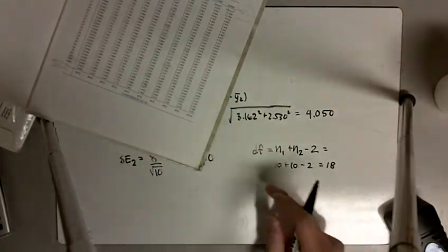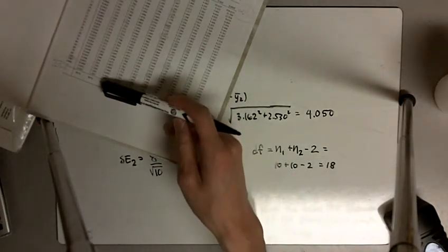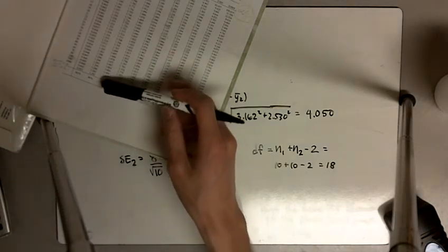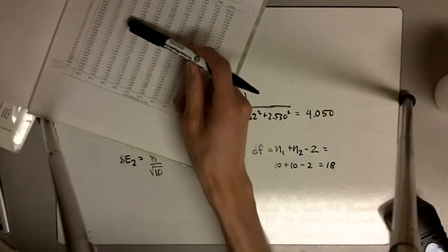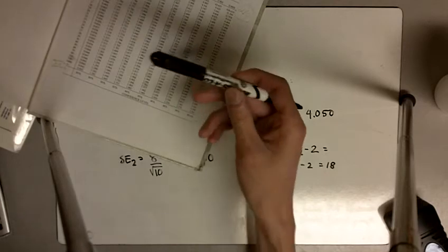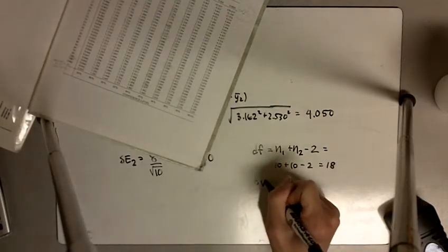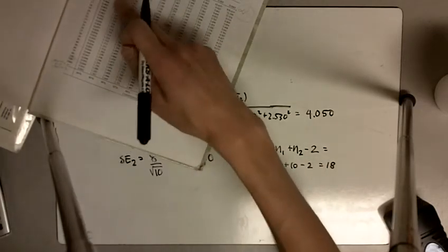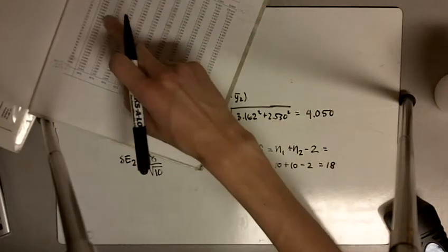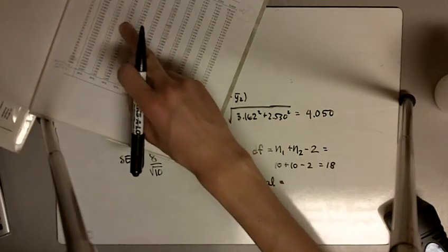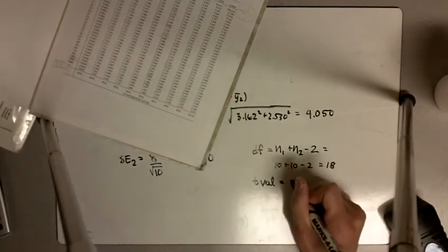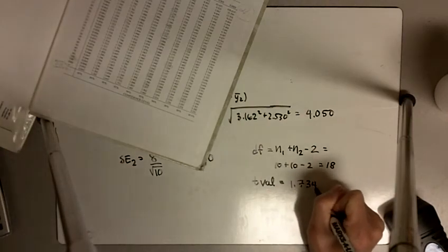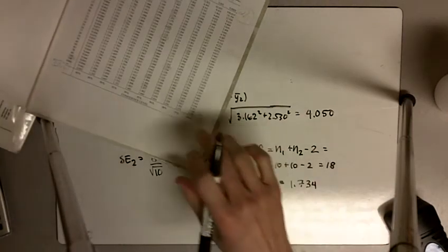We go to our t-table and look for 90% confidence with 18 degrees of freedom. The t-value is 1.734.